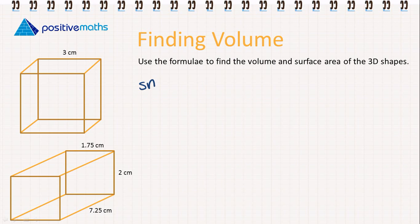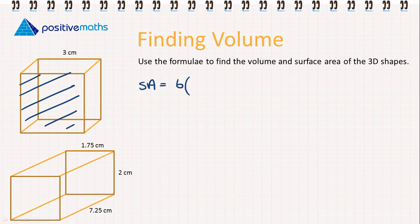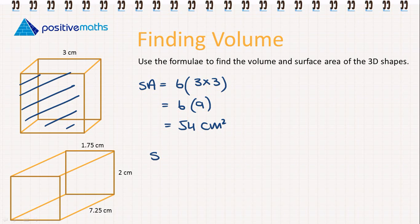Now let's work on finding the surface area of these two solids, starting with the cube. We know all of the faces will have the same area and there are six faces — top and bottom, two sides, and back and front. So it's going to be 6 times the area of one face. The area of one face is 3 by 3, length by width, which gives us 9. So 6 times 9 gives us 54cm squared — that is the surface area.